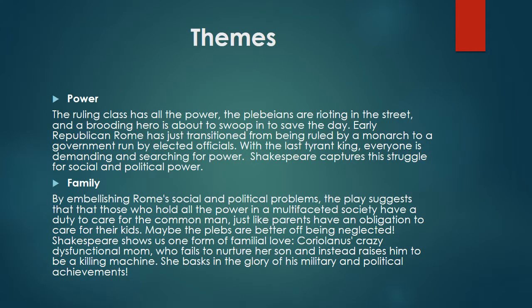There are several themes present in Coriolanus which make it an intriguing and engaging play. The first theme is power. Early republican Rome has just transitioned from being ruled by a monarch to a government by elected officials, and with the last tyrant king gone, everyone is demanding and searching for power — Shakespeare captures this struggle for social and political power. The next theme is family. The play suggests that those who hold power in a multifaceted society have a duty to care for the common man, just like parents have an obligation to care for their children. Shakespeare shows one form of familial love through Coriolanus' dysfunctional mother, who fails to nurture her son and instead raises him to be a killing machine.